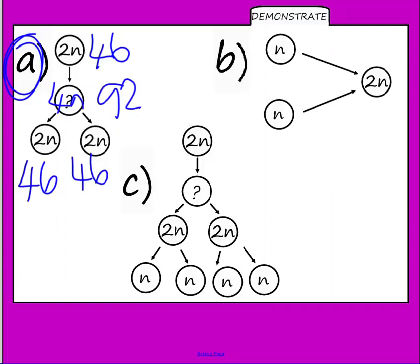Two clones that have 46 chromosomes each. B is actually representing fertilization. Now the N number of chromosomes is 23 in the egg and 23 in the sperm. And then when they come together, they restore the chromosome number again to 46. And then that divides by mitosis to form an embryo.